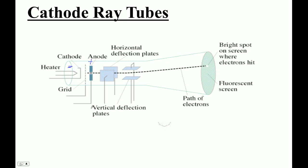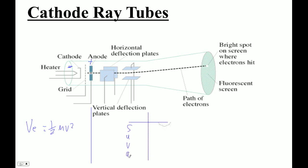For that part of the problem, there are sort of two parts. We use VE equals one-half MV squared. And then over here, we're going to actually do things with kinematics. We're going to set up one of those projectile motion problems where you've got v-sub-0, and you've got horizontal and vertical.